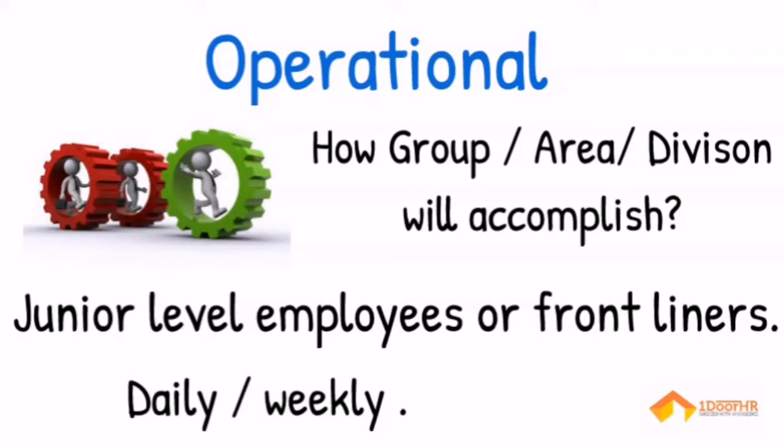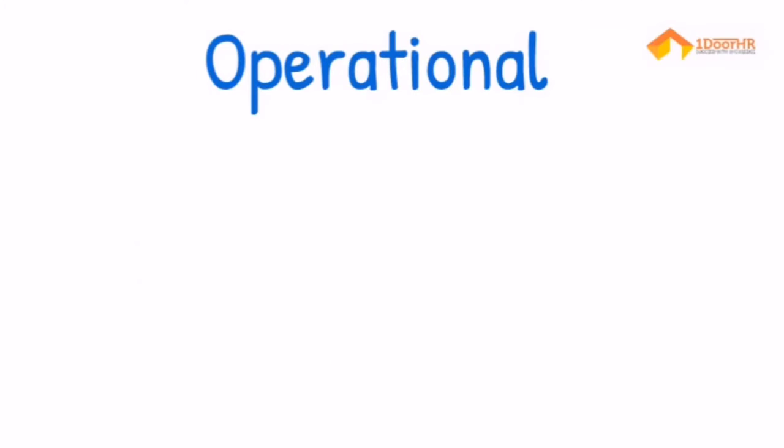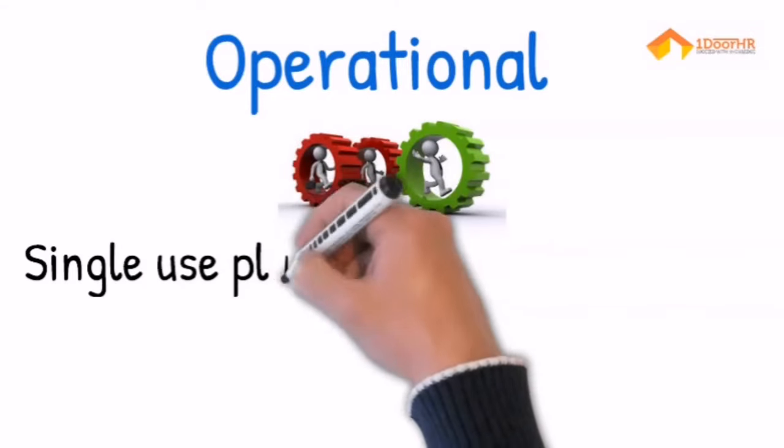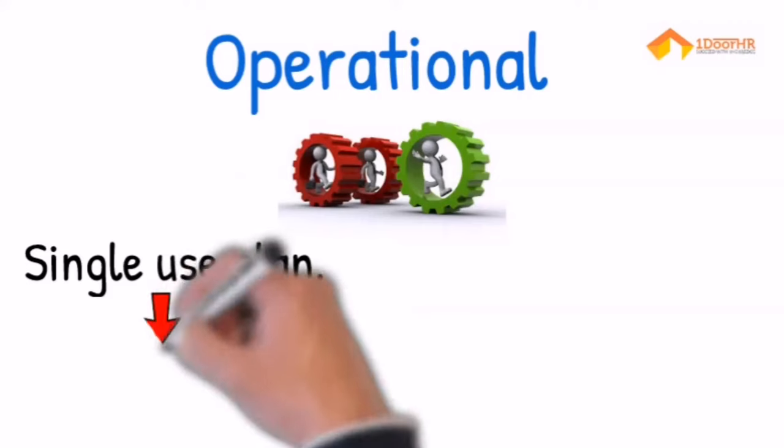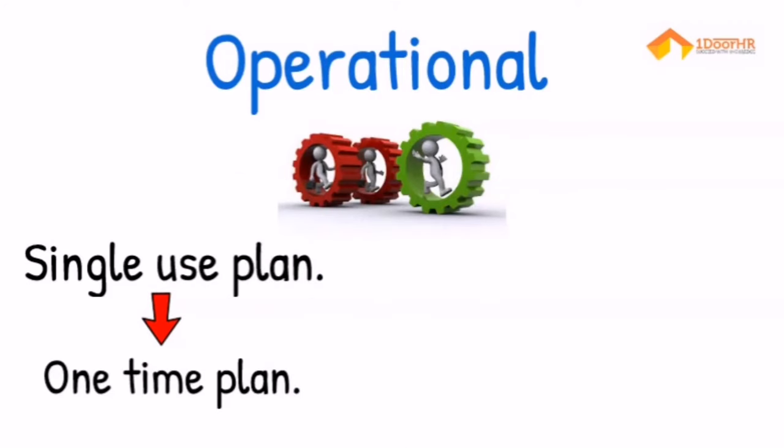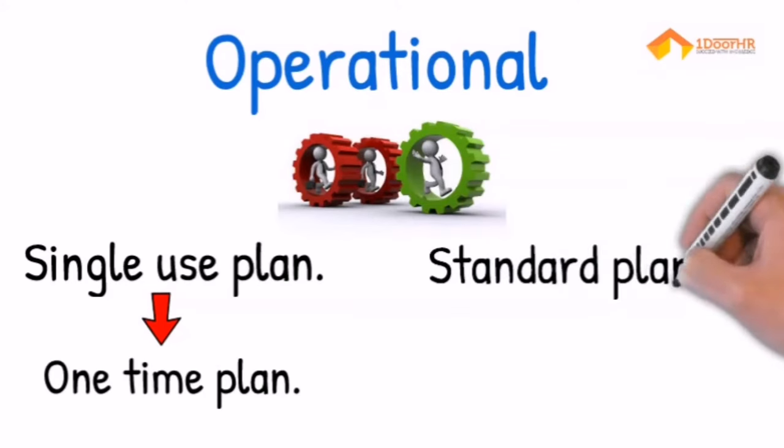Operational level plan is divided into two categories. Single-use plan: it's a one-time plan specially designed for different and non-recurring situations and projects. Second type of operational plan is standing plan.